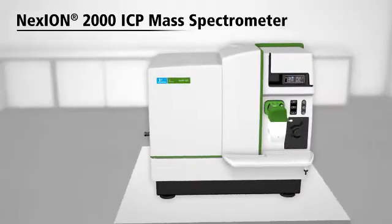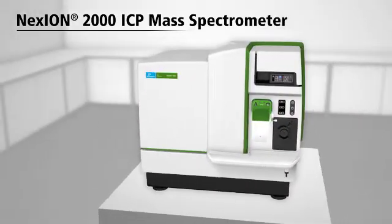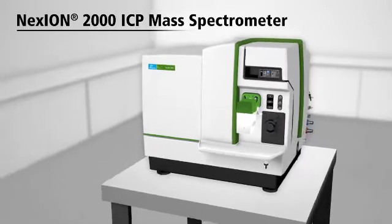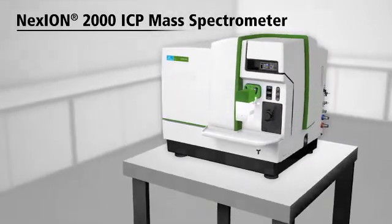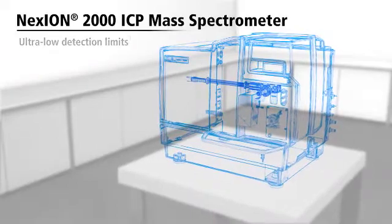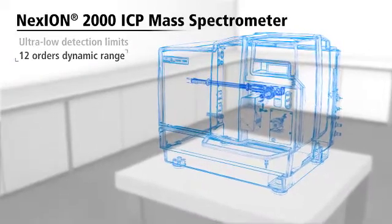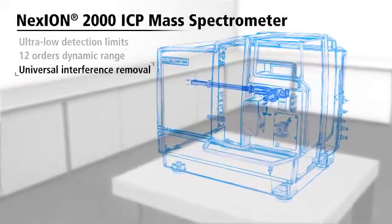Perkin Elmer's Nexion 2000 is a compact system that combines the power of a triple-quad with the ease of use of a single-quad instrument. Engineered to deliver ultra-low detection limits, 12 orders of dynamic range, and universal interference removal.